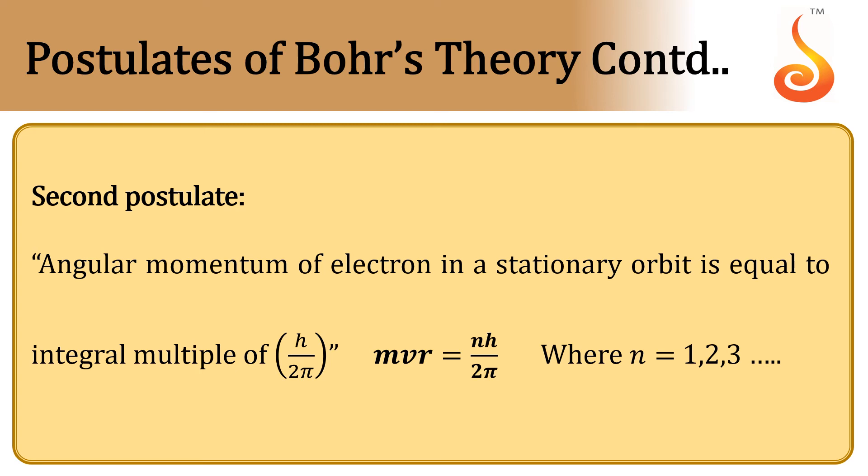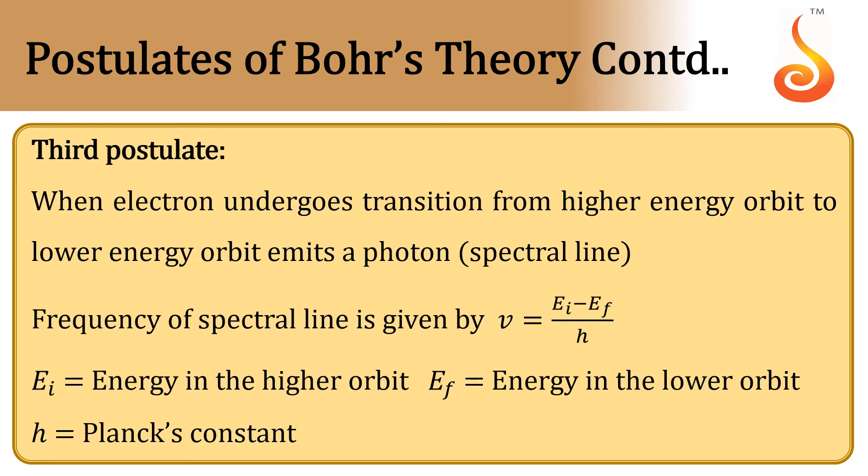Now the third postulate. When an electron undergoes transition from a higher energy orbit to a lower energy orbit, the electron loses some amount of energy.